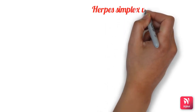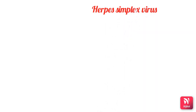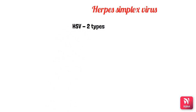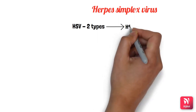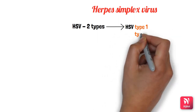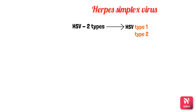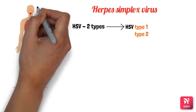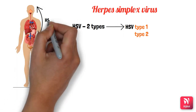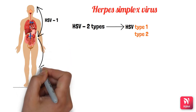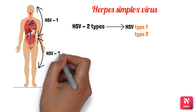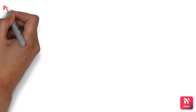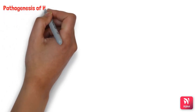The first herpes virus is herpes simplex virus (HSV), which is of two types: HSV type 1 and HSV type 2. HSV type 1 causes above-the-waist lesions such as oral and ocular lesions, whereas HSV type 2 causes below-the-waist lesions — most commonly genital infections.